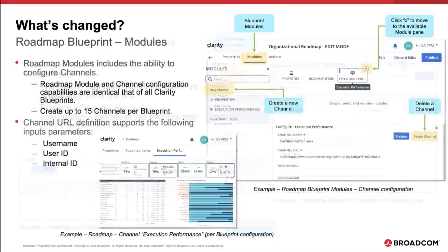Let's talk about module configuration. Out of the box, the properties and roadmap items are the available modules consistent with other parts of the application. Up to 15 channels can be configured per roadmap blueprint. In the bottom left, you're looking at an example of the runtime of a Power BI report configured as a channel. The upper right is showing another channel, which will ultimately show up as a module in the roadmap instance.